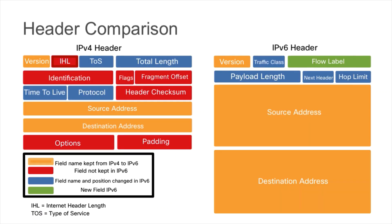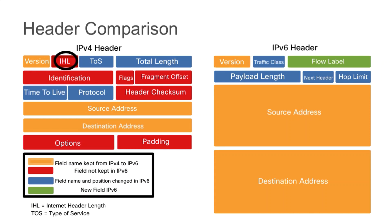Let's compare the headers. On the left-hand side you see an IP version 4 header. Both versions have a version field. However, IPv4 has an IP header length field that is not needed in IPv6, so that field was simply removed, which reduces the overhead involved in the header.